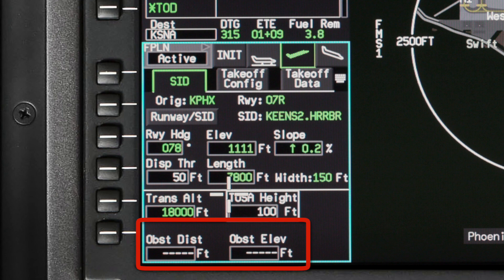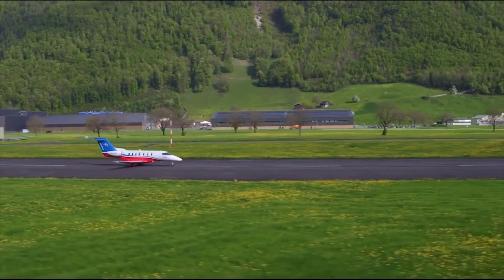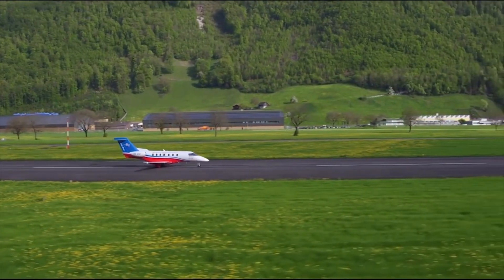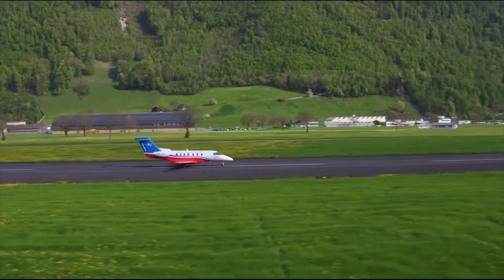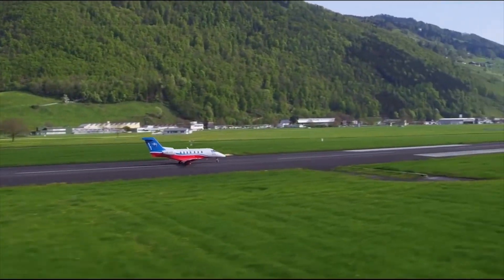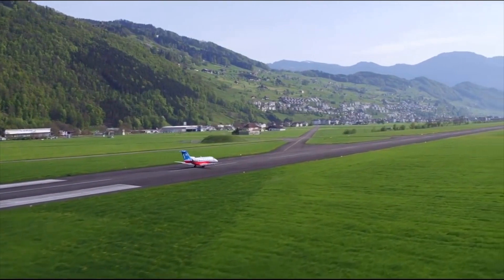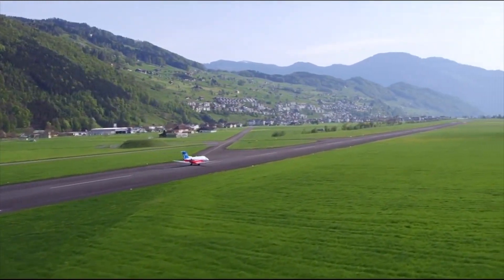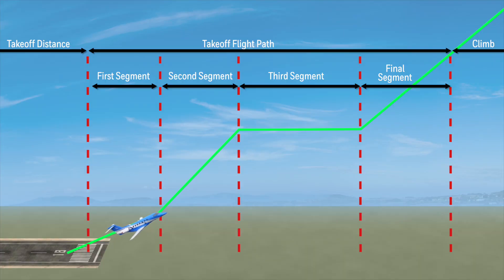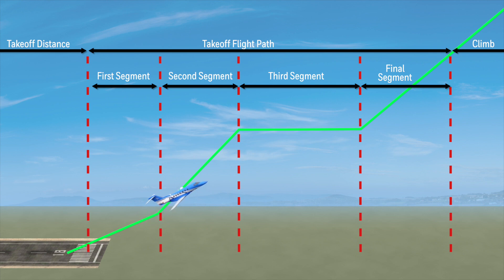The TOLD feature has an obstacle clearance function which is a simplified obstacle clearance calculation that determines whether or not an obstacle can be cleared from the point of brake release until flap retraction is complete. For multi-engine aircraft, it takes into account the takeoff distance and the single-engine climb gradients for the first and second segments.